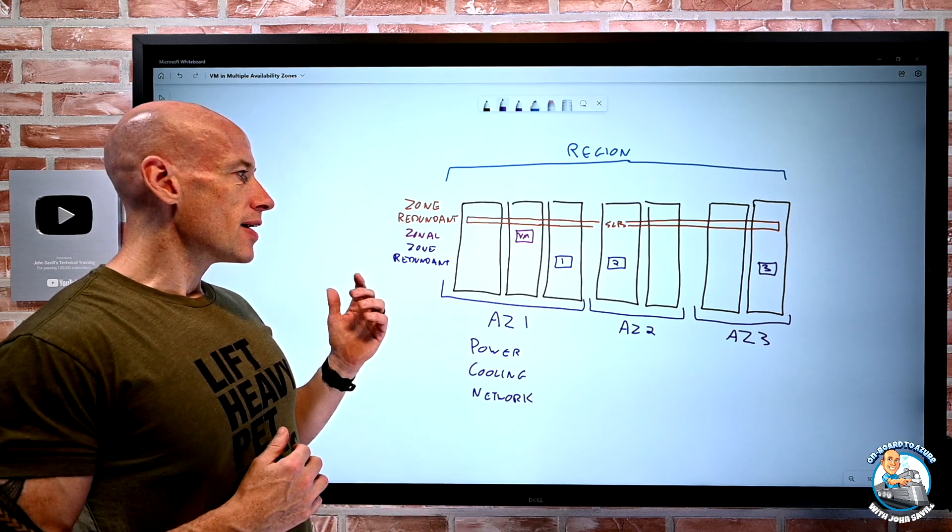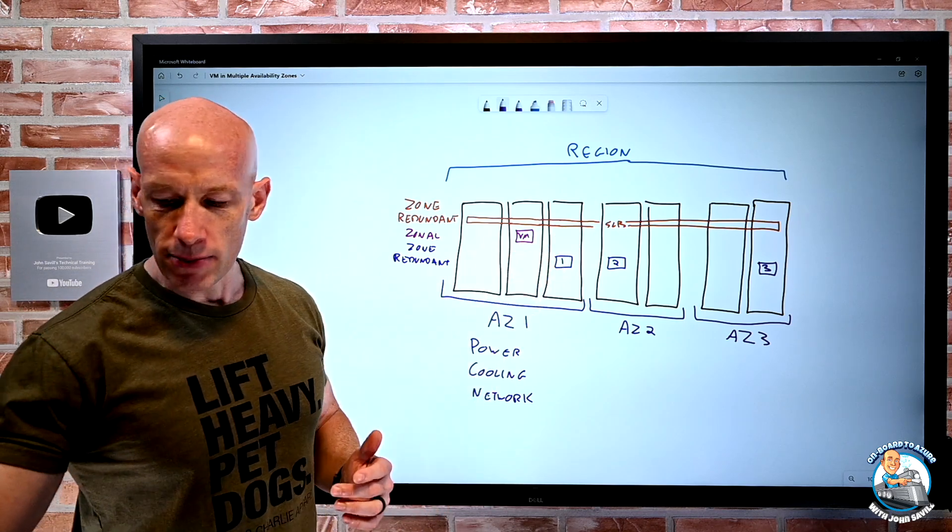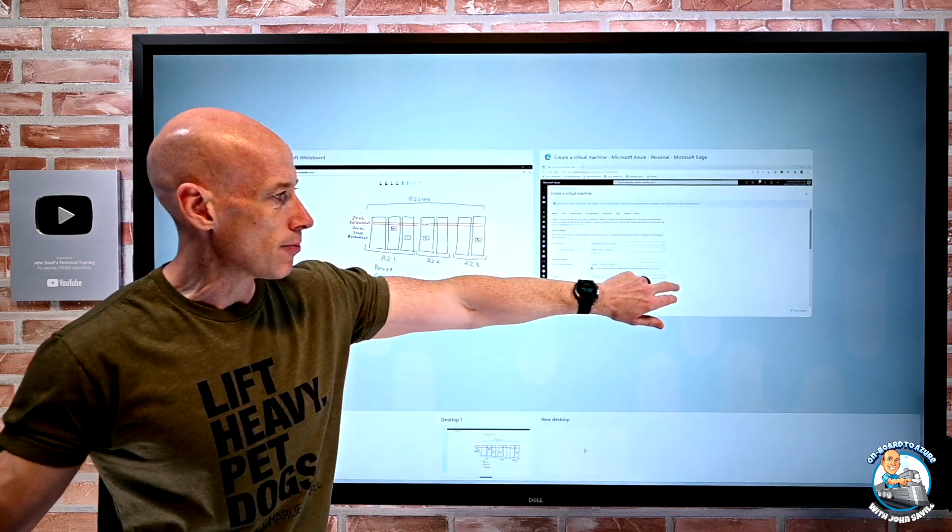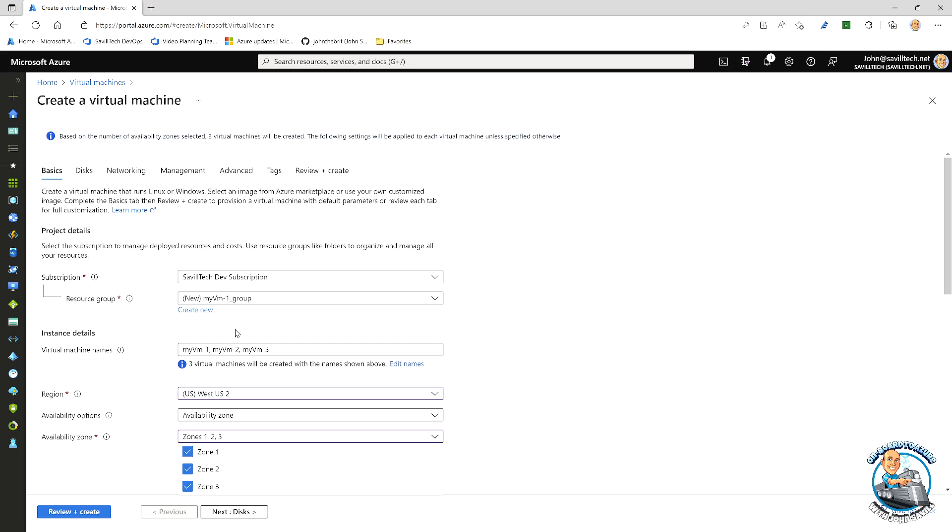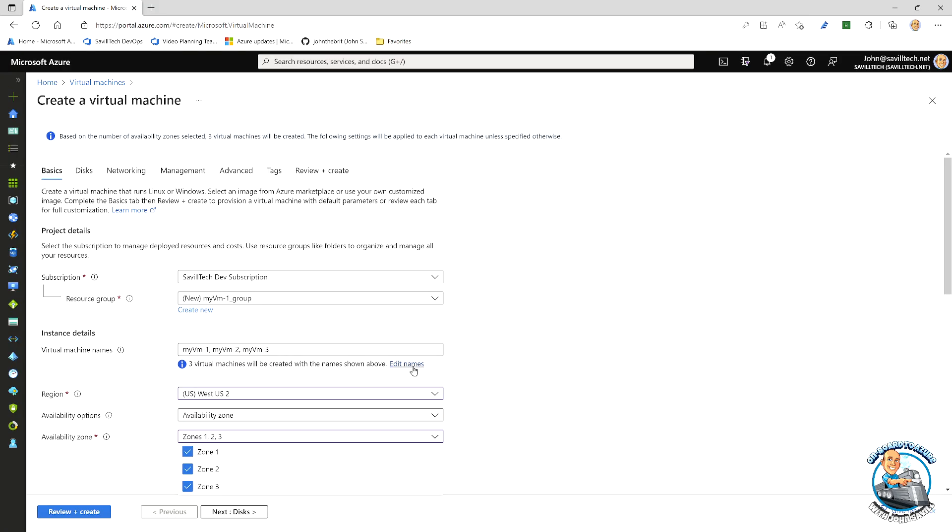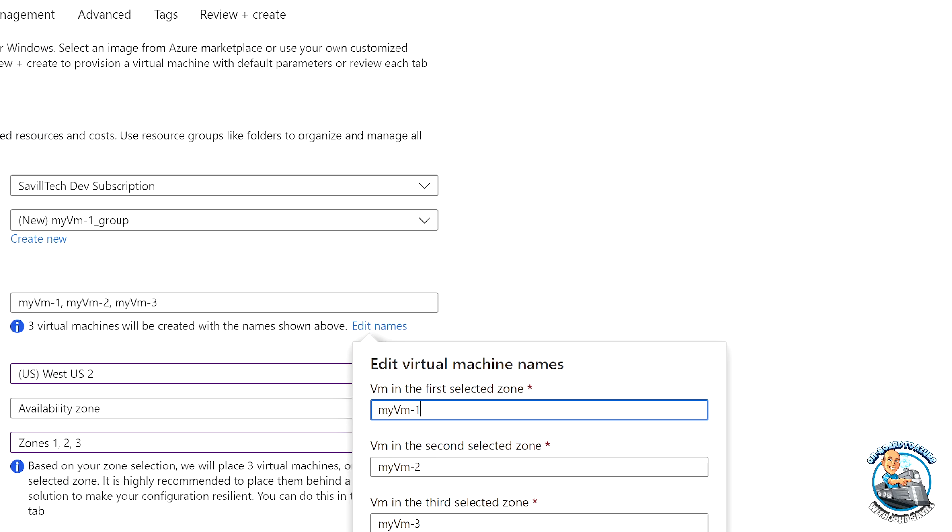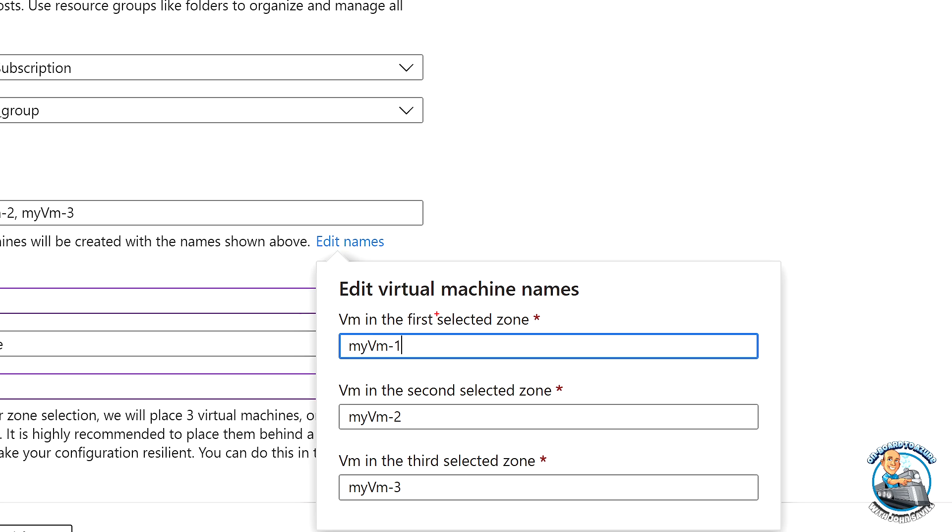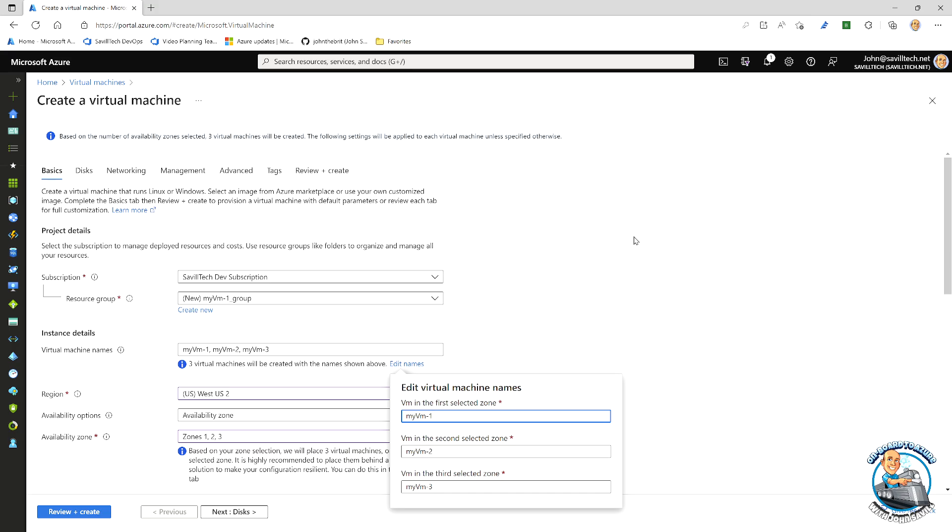It's just going to go and basically create separate VMs. And you can see it when you actually look in a bit more detail of what it's doing. You can see pretty clearly, hey, look, it's going to create you three VMs, dash one, dash two, dash three. You can edit those names if you want based on, hey, the first selected zone, second selected zone and third selected zone. If you were doing things like public IPs, it would create three public IPs. But it's not doing anything beyond that.